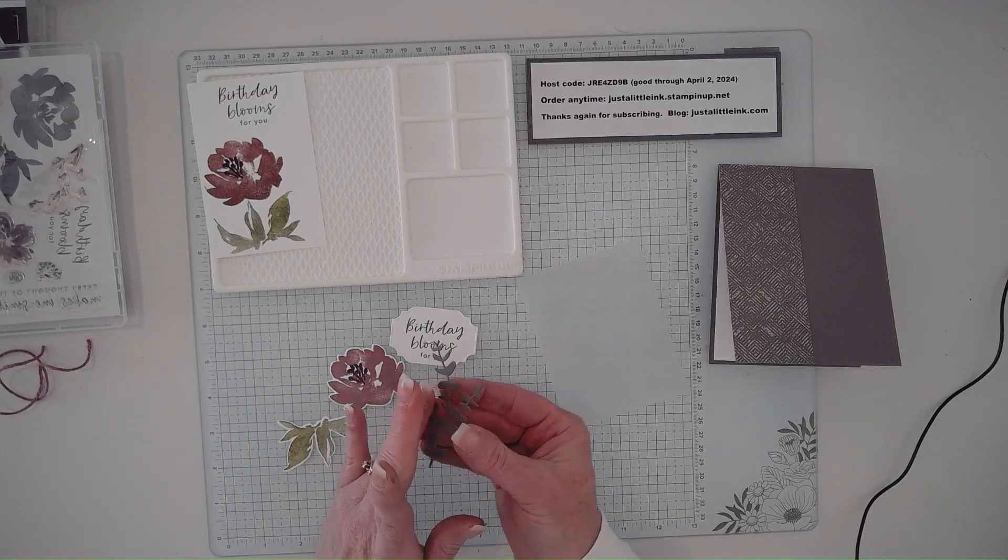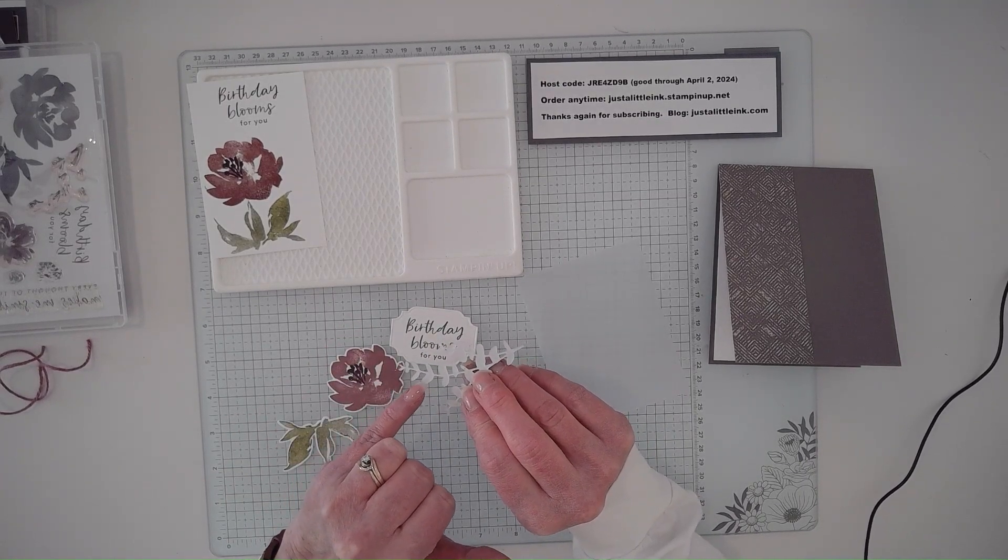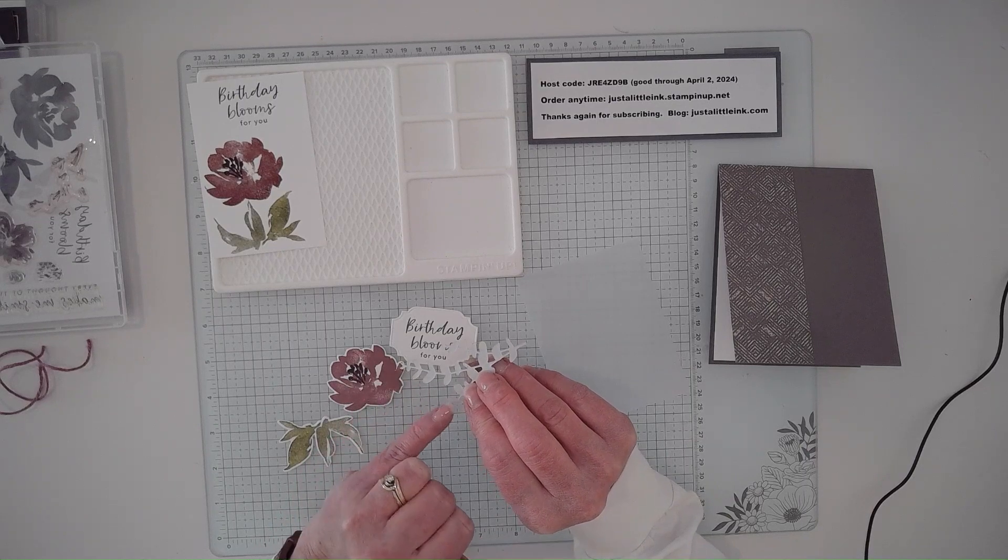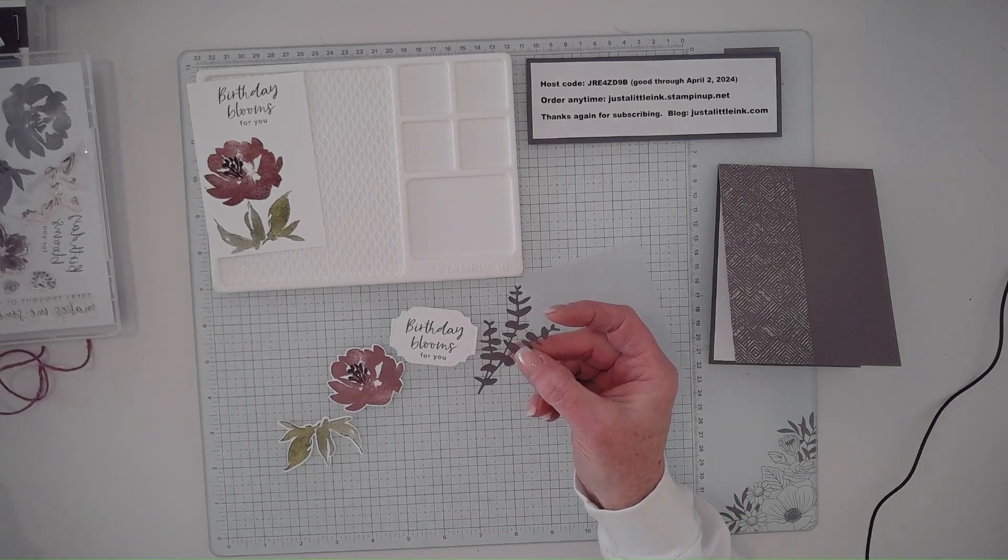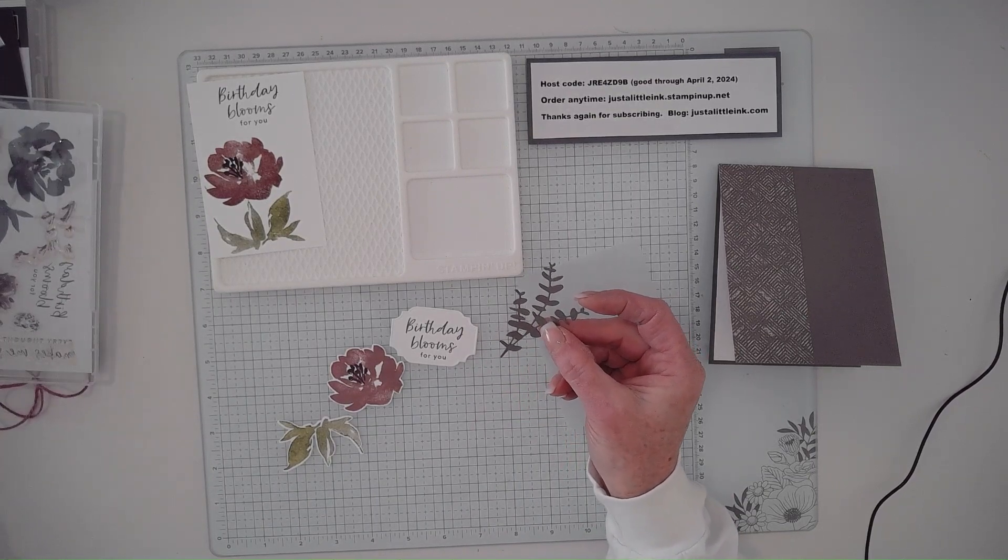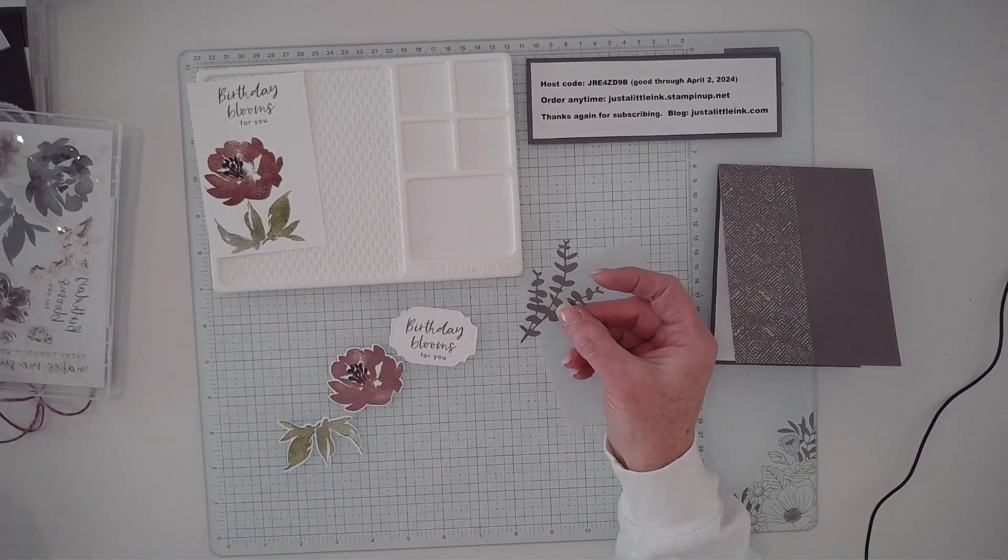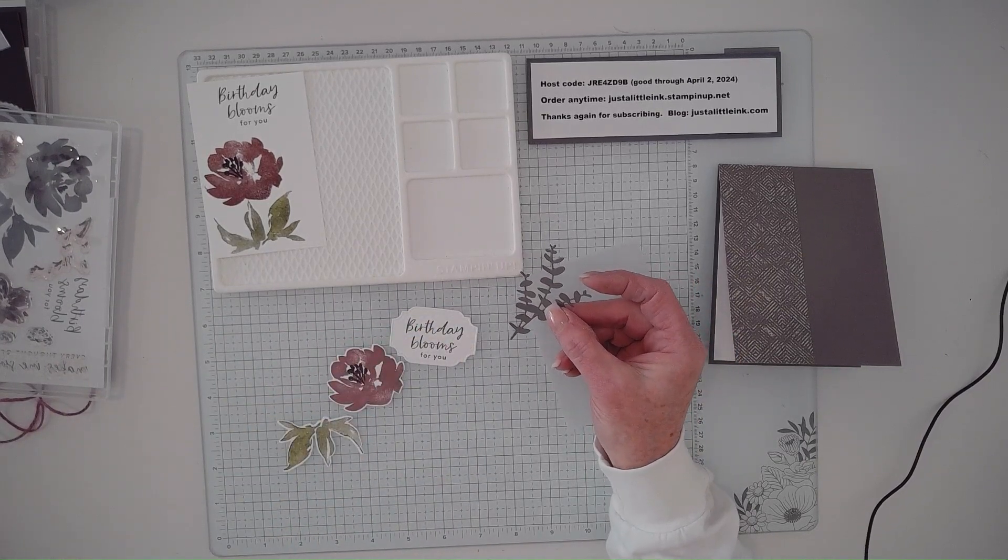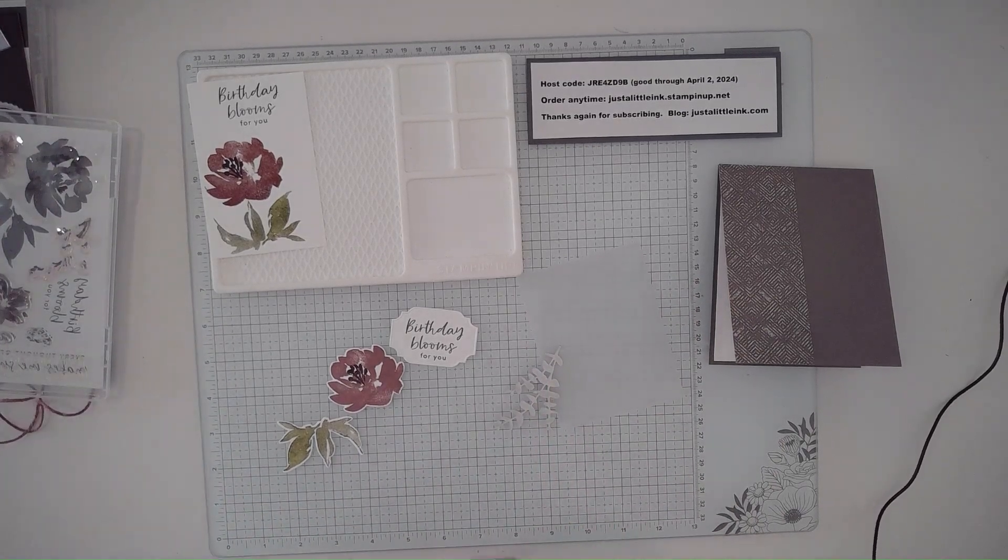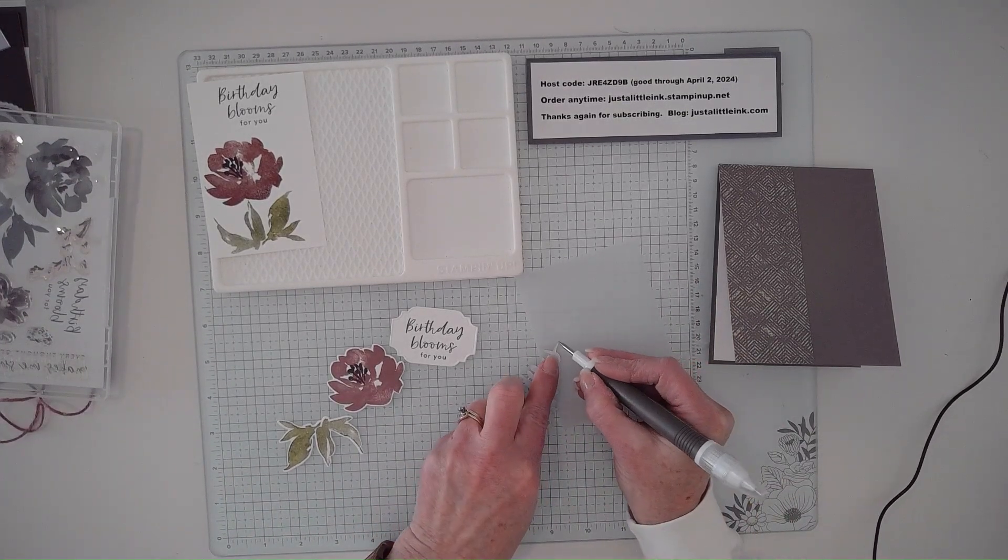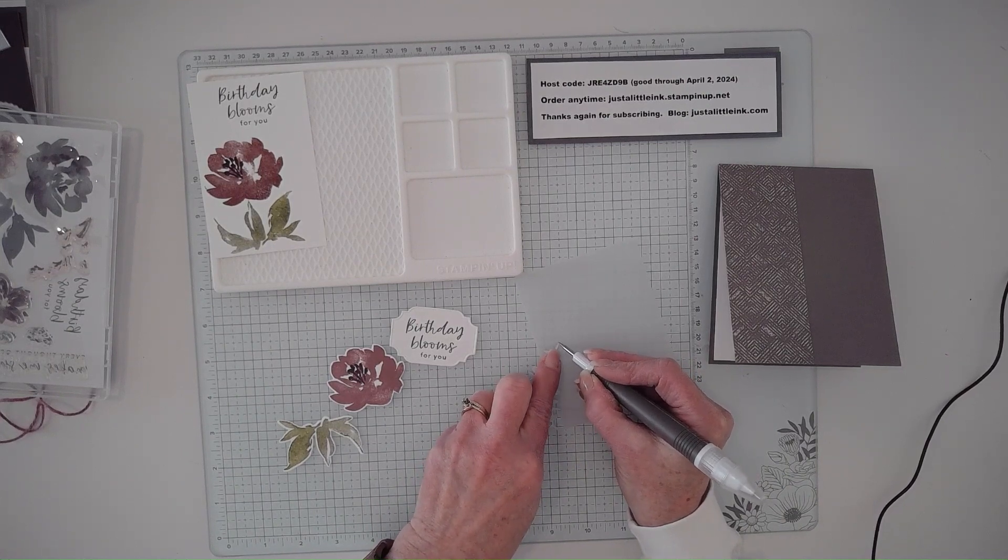I had attached some of the adhesive sheets and then cut out this, which reminds me of eucalyptus. I'm going to grab my Take Your Pick tool and the pokey end to lift that off. What that adhesive sheet does is for detailed die cutting, it is so much easier to keep things down if you attach that before you cut things out.